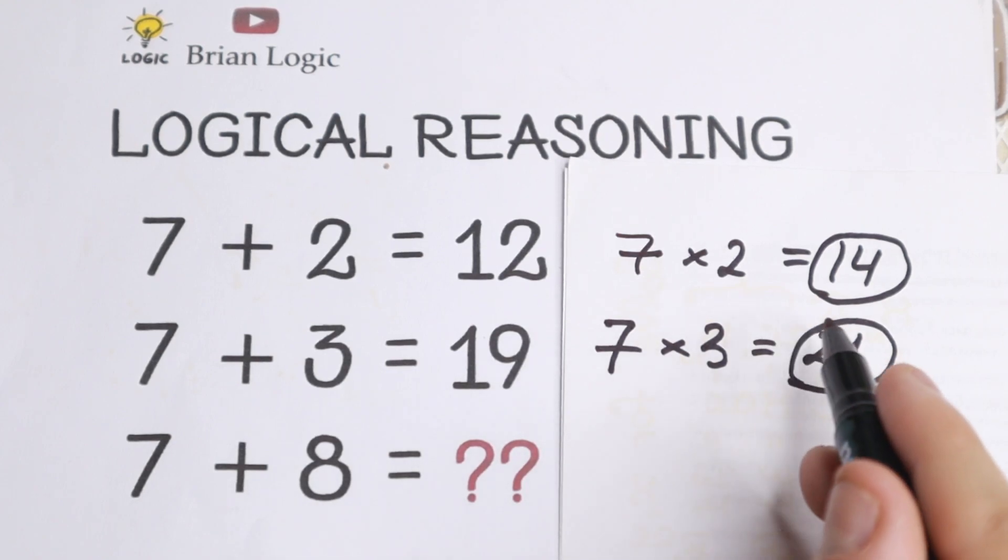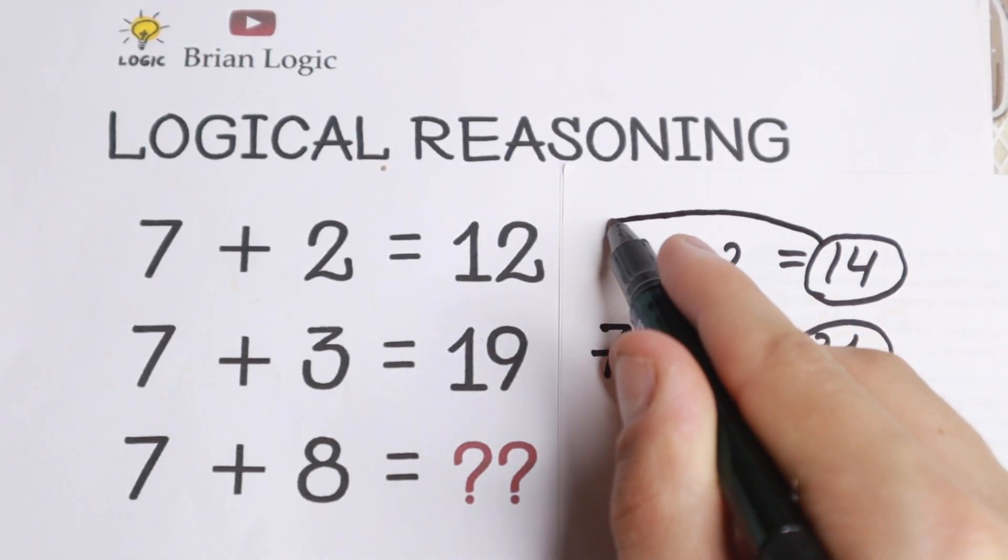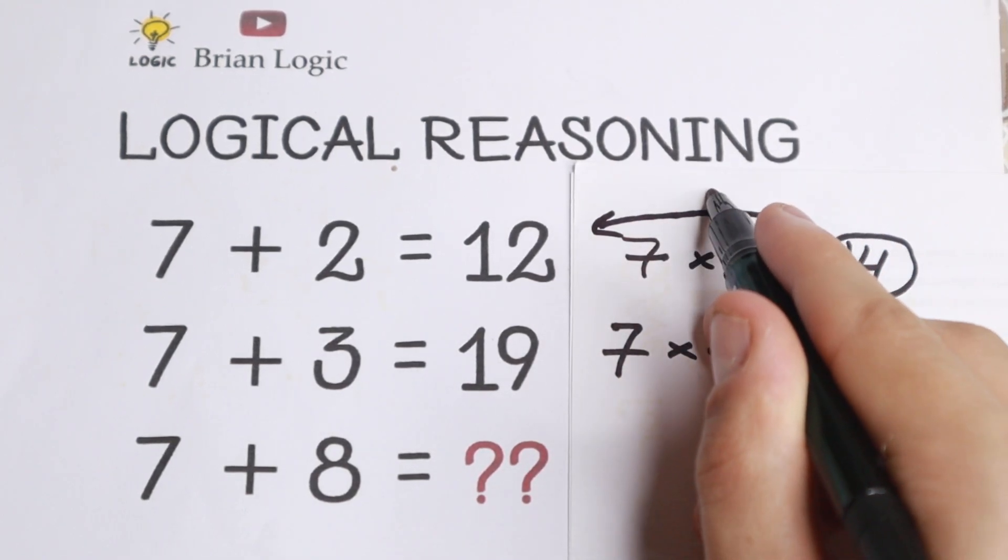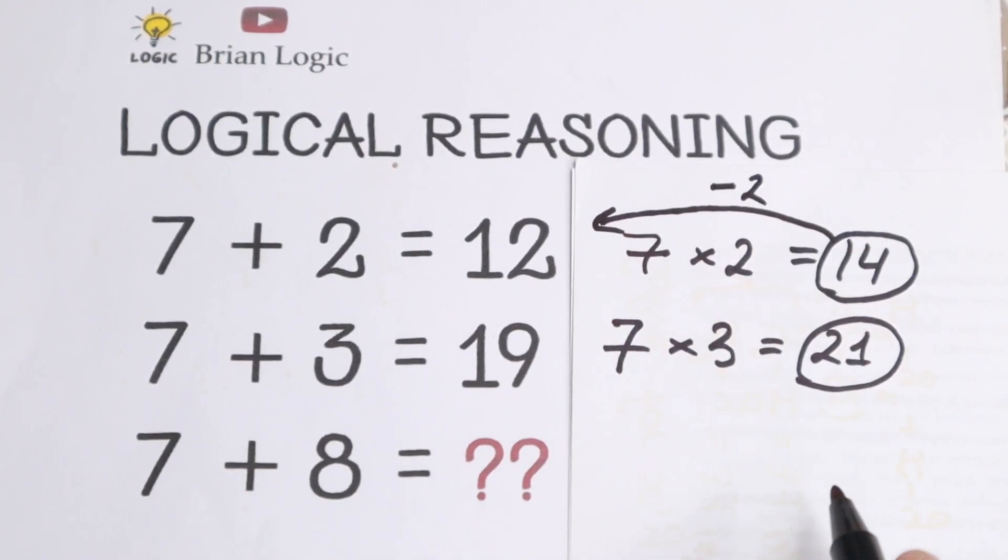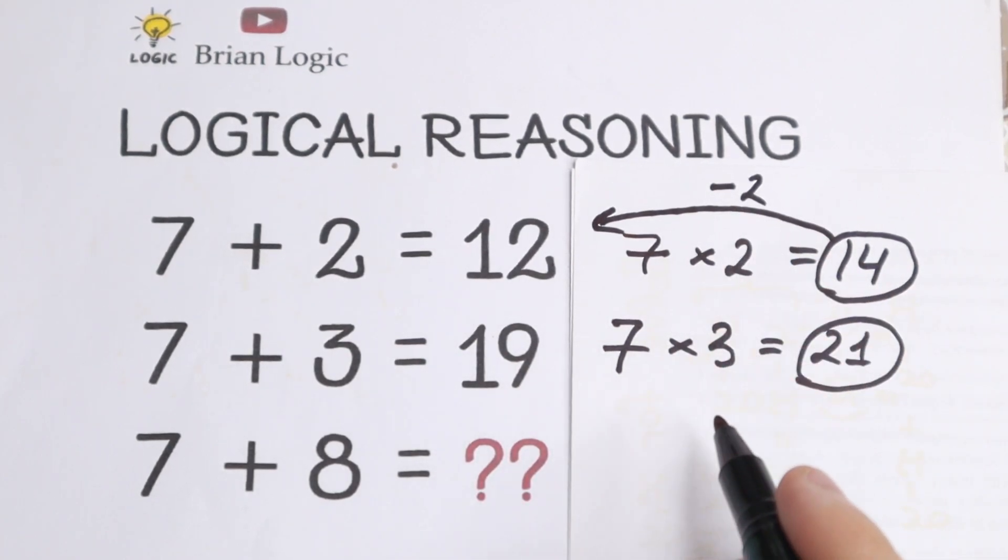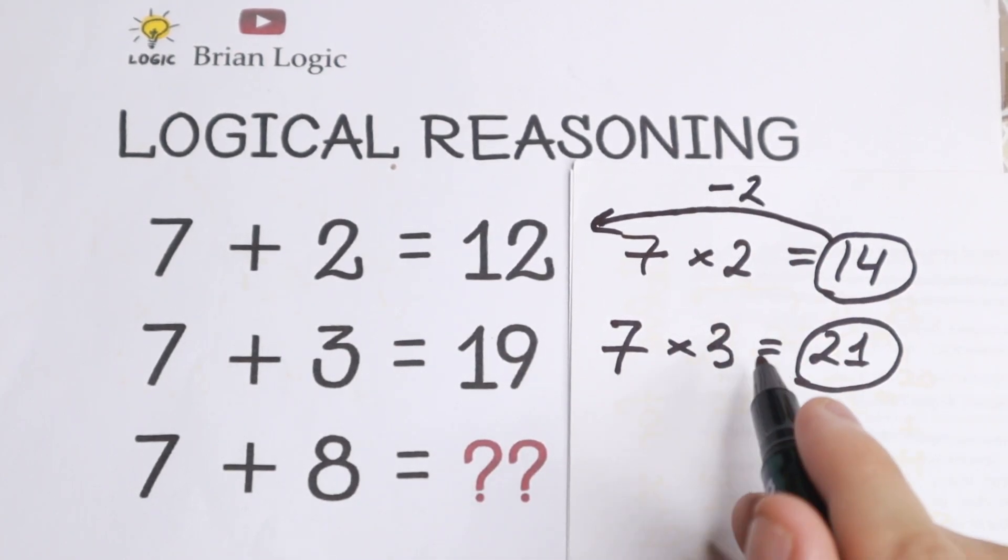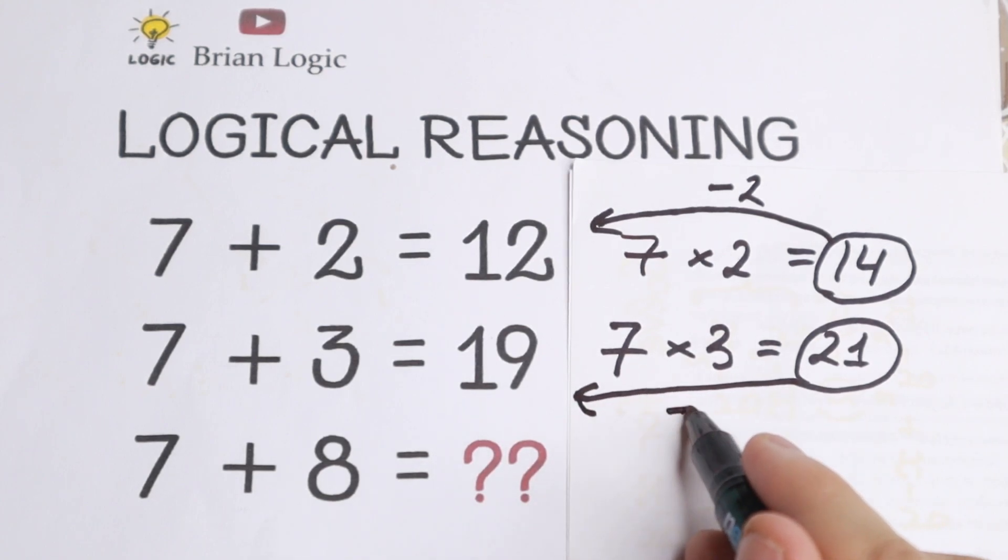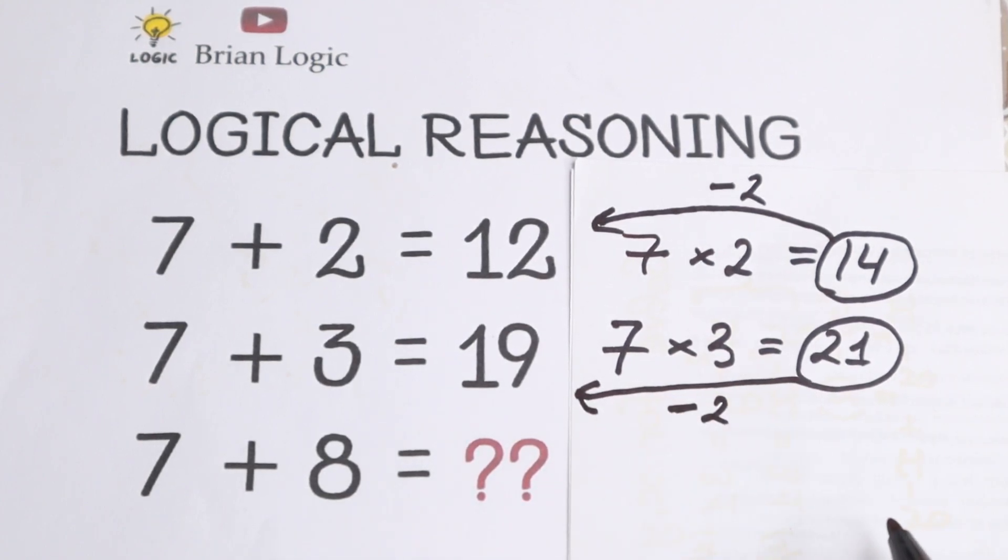If you look from the right to the left, we need to subtract 2 from this 14 to get this 12, because 14 minus 2 is equal to 12. And right now we need to subtract 2 from this 21 to get 19. So as you can see we find our pattern. We need to change addition by multiplication and we need to subtract 2.